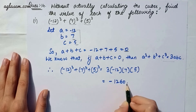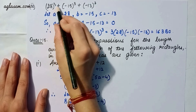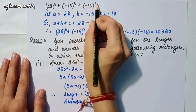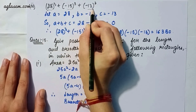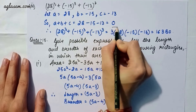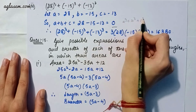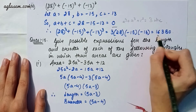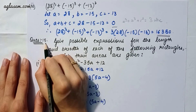Part two: 28³ + (-15)³ + (-13)³. Again letting a, b, c equal those values, adding them gives 0. Applying the formula a³ + b³ + c³ = 3abc, we get 16380.